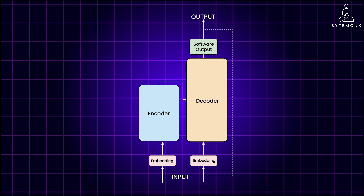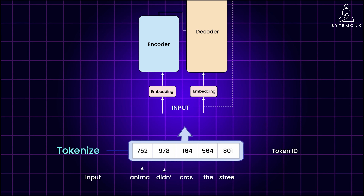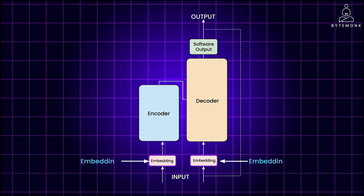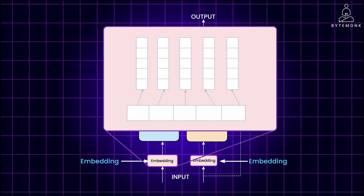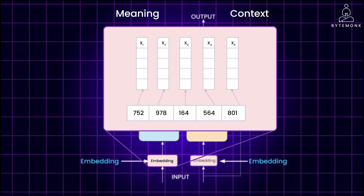The encoder block processes the input sentence where it must first tokenize the words — converting words into tokens and then to numbers. You can choose from multiple tokenization methods. Now that your input is represented as numbers, we pass it to the embedding layer. This layer is a high-dimensional space where each token is represented as a vector and occupies a unique location within that space, encoding the meaning and context of individual tokens in the input sequence.